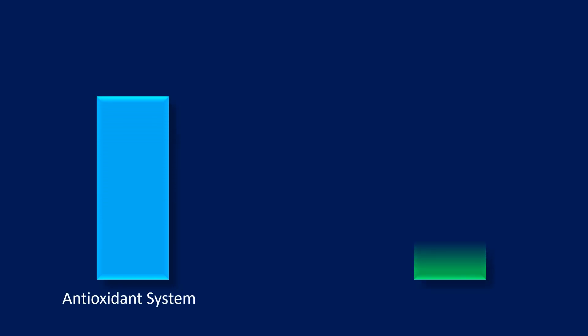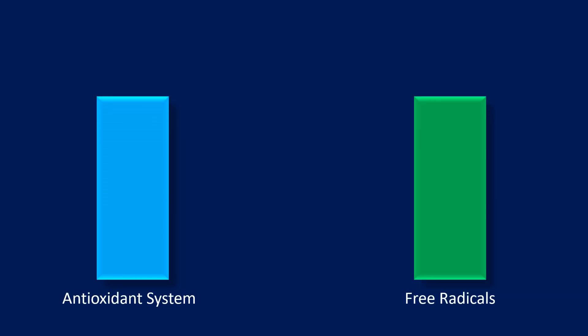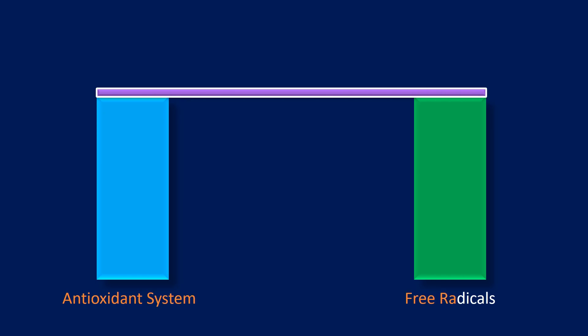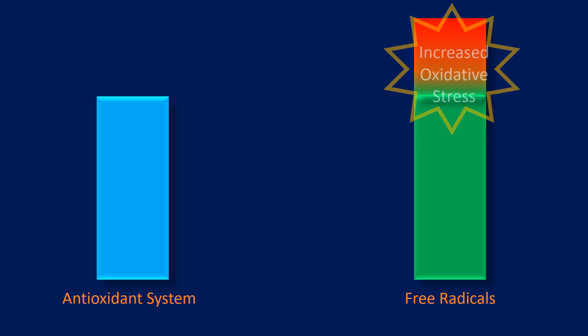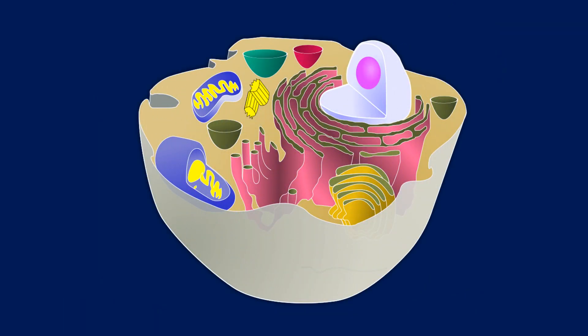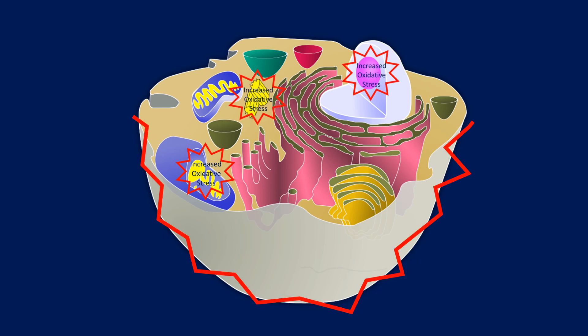However, the oxidative processes and the amount of free radicals must be kept in check by the antioxidant system. Because if the level of free radicals overcomes the antioxidative defenses of the body, it results in increased oxidative stress that causes tissue damage. The increased level of free radicals can induce local injury by reacting with lipids, proteins, and nucleic acids. Also, the interaction of free radicals with cellular lipids leads to membrane damage and the generation of lipid peroxide byproducts.